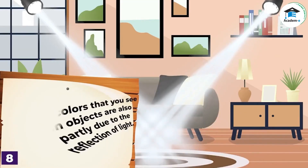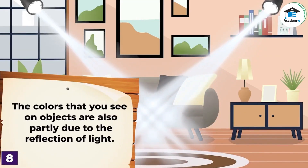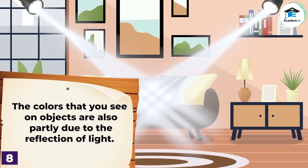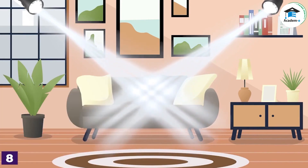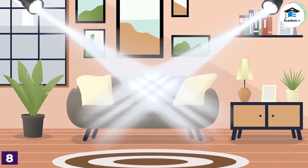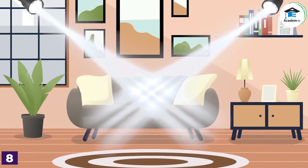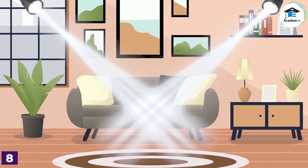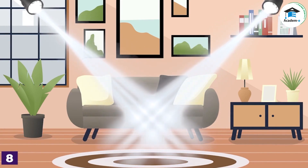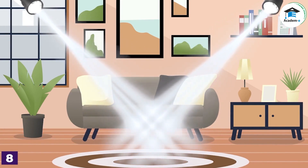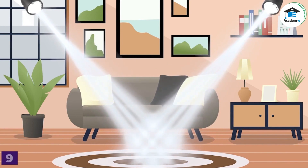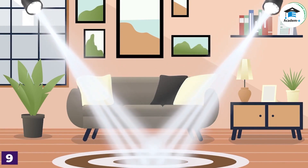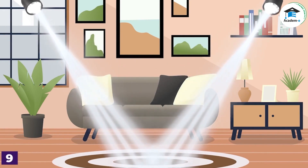The colors that you see on objects are also partly due to the reflection of light. When light shines onto an object, the object absorbs all of the colors in the ROYGBIV spectrum except the color that it appears to be. That color is then reflected by the object to your eyes, causing you to see the color of the object.